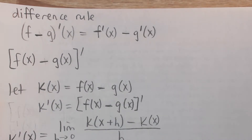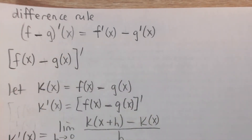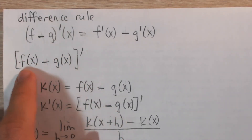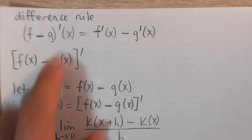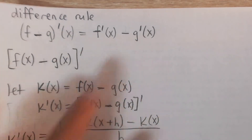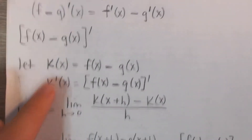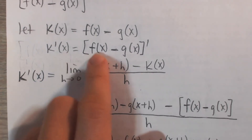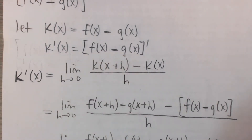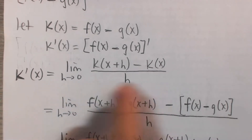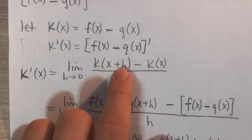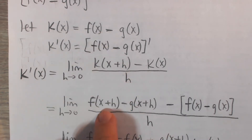We can use a similar proof for the difference rule — all I do is change around some of the minus signs and the logic follows in a similar fashion. The difference rule says that the derivative of a difference of two functions is the difference of their individual derivatives. So I'll let k of x be the difference of f and g, and take its derivative using the limit definition.